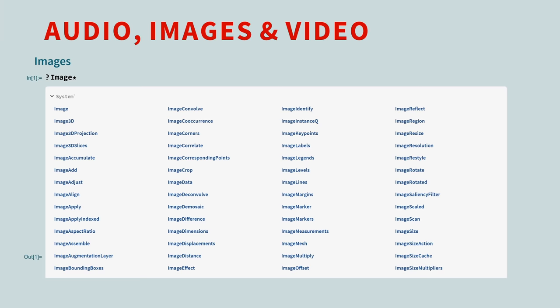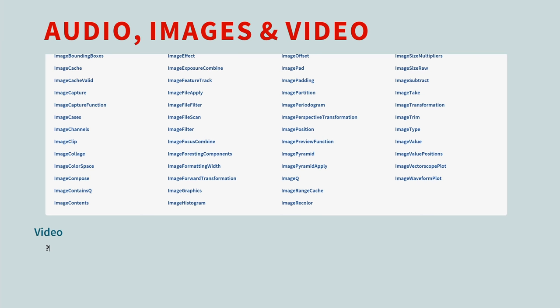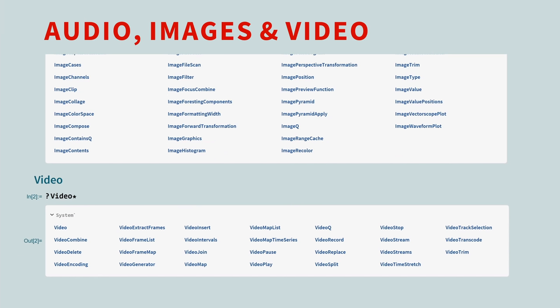There are also functions for working with images. All these audio and image functions can also be used when working with video. After all, a video clip is a sequence of images with a collection of audio tracks.